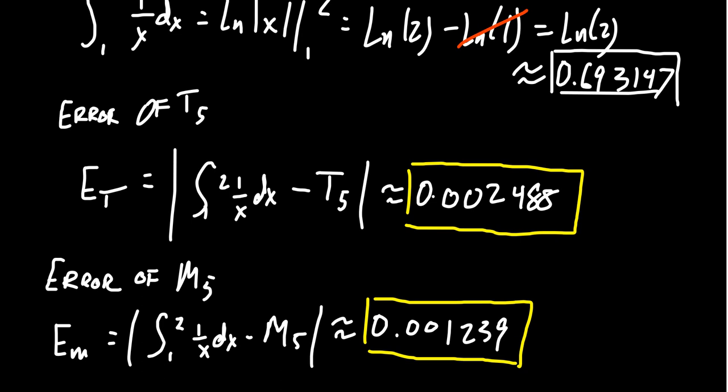And so we see in this example, one could calculate the error because we know how to calculate the integral directly using the fundamental theorem of calculus. This might seem a little bit weird. It's like, well, why in the world would we estimate the error if we can actually calculate the true area? In practice, we generally won't be able to do that. And we'll talk about that a little bit more in the next video.